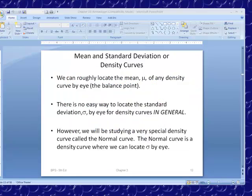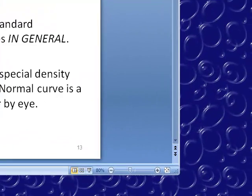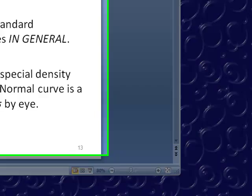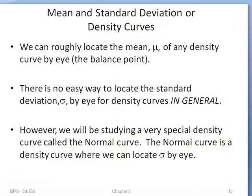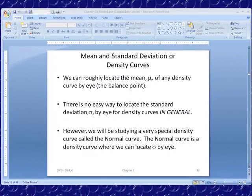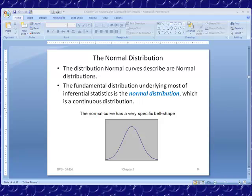For most density curves, we can roughly locate the mean μ of the density curve, but σ is a little more difficult. However, with the normal curve we're studying in this chapter, we can locate σ by eye. Let's look at the normal curve and its shape. It's called the bell-shaped curve. This is the fundamental distribution underlying most of inferential statistics for continuous distributions.